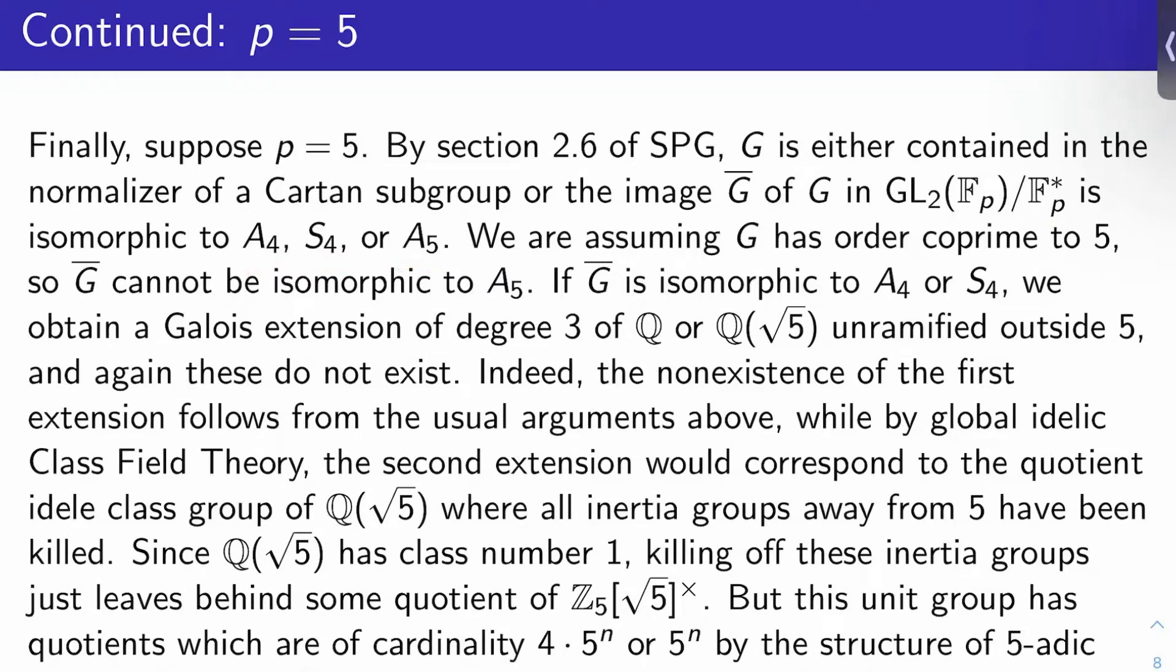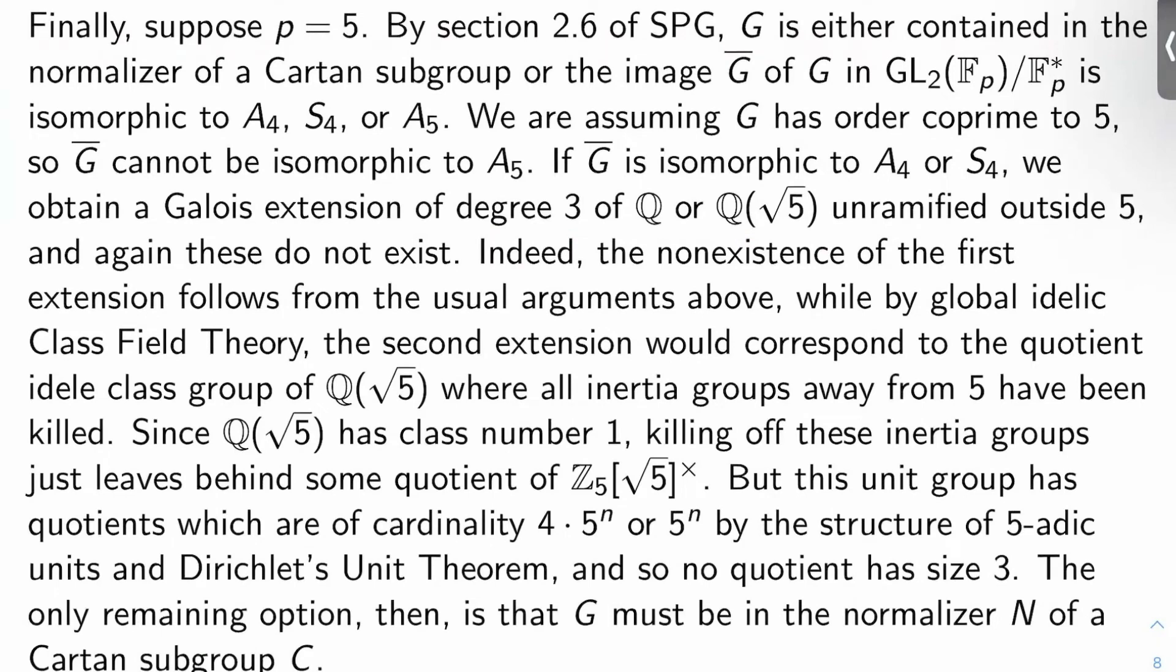But here's the thing. Remember, I'm assuming G has order co-prime to 5. G bar definitely isn't isomorphic to A5, then. If G bar is isomorphic to A4 or S4, though, what does this tell me? For example, this gives me a Galois extension of degree 3 of Q or Q adjoin root 5, depending on the case, unramified outside 5. Again, rho bar 5 is unramified outside 5. And again, these extensions that must exist actually don't exist.